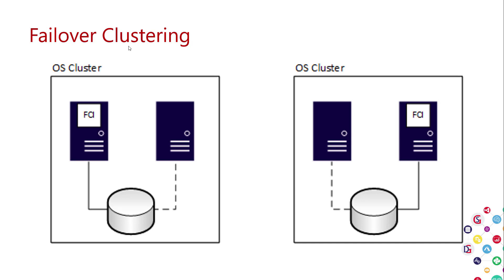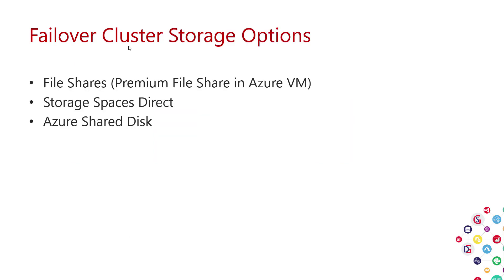There are several ways to accomplish the shared storage that's key to failover clustering. You can use file shares — traditional SMB file shares. In Azure VMs, you can use premium file shares, which is a popular way to set up storage that either node can connect to. Storage Spaces Direct is a Windows cluster technology that uses replication — local storage on each node is replicated from one node to the other. So the storage is shared but local, giving you better performance.